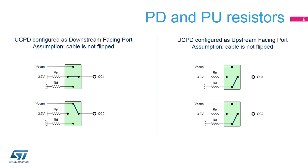In UFP mode, assuming no cable flip, CC1 and CC2 are connected to RD, which is a 5.1 kΩ resistor. Since the UCPD supports both DFP and UFP operation, the internal switches represented in the figure select the current configuration.